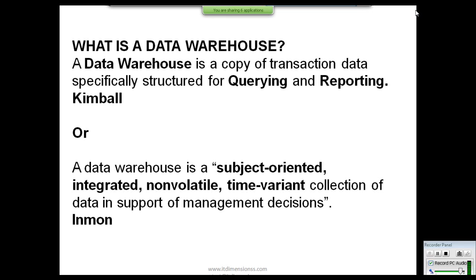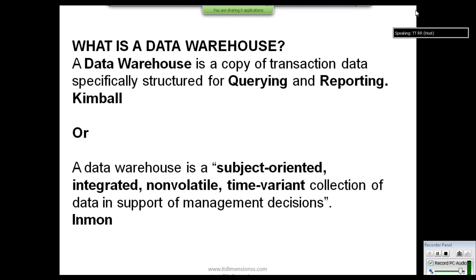Time variant means the amount of data in a data warehouse increases over time. When we newly implement a data warehouse at time 0, the amount of data will be zero, and as time goes on at time X the data warehouse will be full of data — that's why it is called a time-variant collection of data. This data warehouse is mainly used for analysis and management decision support, known as DSS — Decision Support System. Management makes their business decisions according to the analyzed data from the data warehouse.